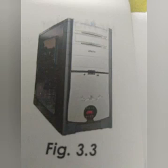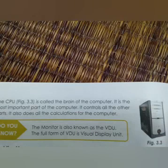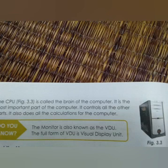CPU is a box. It is the central processing unit. It is also called the brain of the computer. It is the most important part of the computer. It controls all the other parts. It also does all the calculations for the computer.